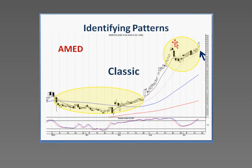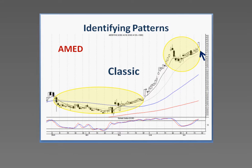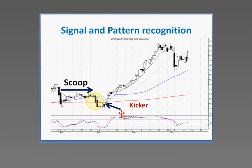The reason we call this one the classic is because we get the results as expected coming out of a fry pan bottom. And then what's our next expectation? That this move right here will be the same magnitude as this move right here. So even if we've missed this move, we can pretty much calculate what our upside potential is on the next move. This software identifies the patterns.